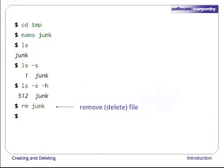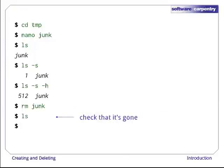Let's tidy up by running rm junk. rm stands for remove. This command deletes files. It's important to remember that there is no undelete. Unix doesn't move things to a trash bin — it unhooks them from the file system so that their storage space on disk can be recycled. Tools for finding and recovering deleted files do exist, but there's no guarantee they'll work since the computer may reclaim the file's disk space right away. If we now run ls, its output is empty again, which tells us that our file is gone.